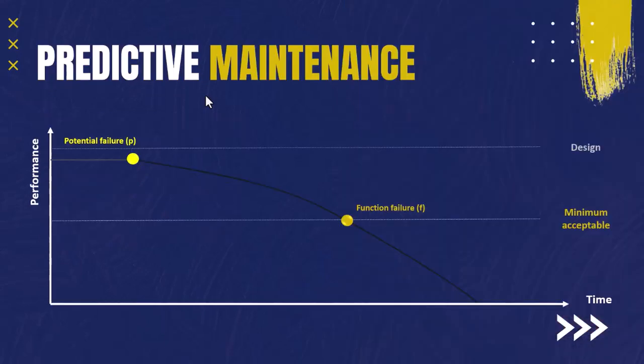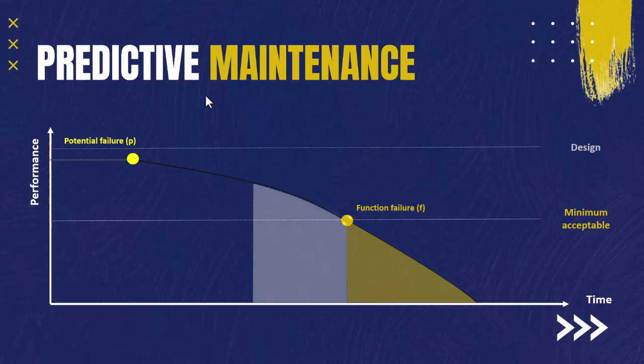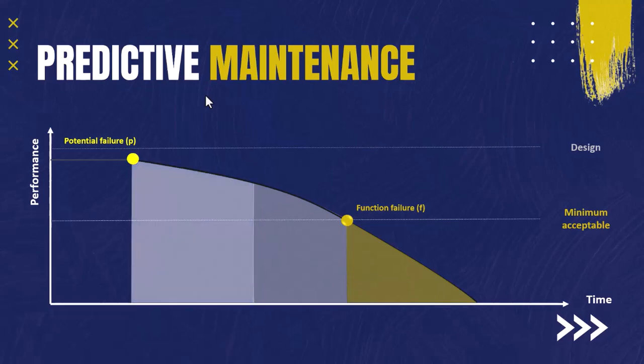Now we can look again at our famous PF curve. We earlier identified maintenance works carried out after function failure as corrective maintenance, while maintenance works prior to function failure are preventive maintenance. Now we have a new type of maintenance which could be carried out any time prior to function failure based on specific failure signals.